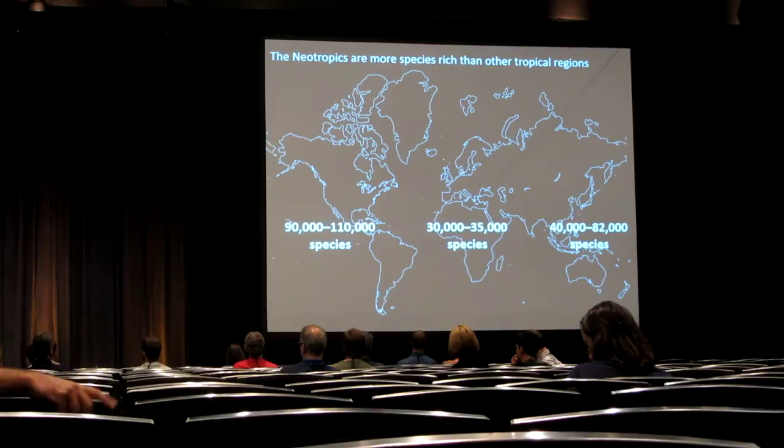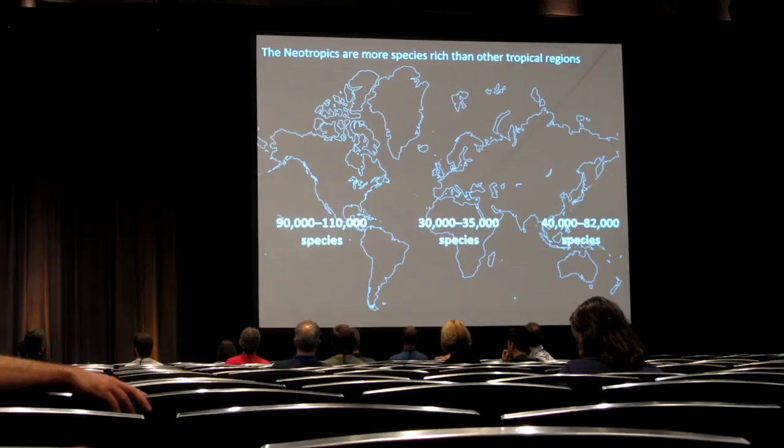So what this means is the Neotropics may house more species than all other tropical areas of the world combined.